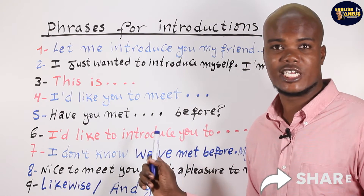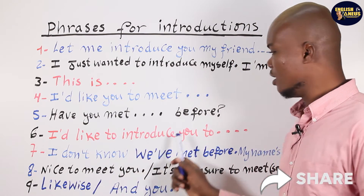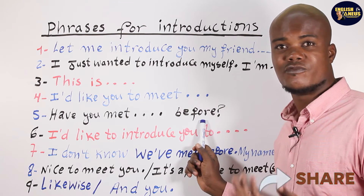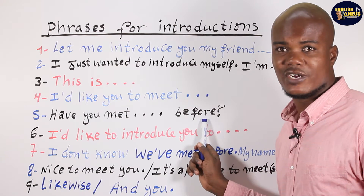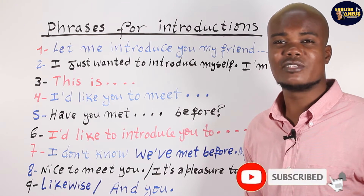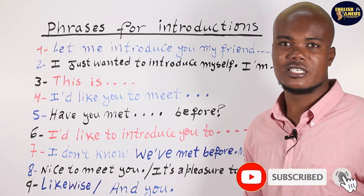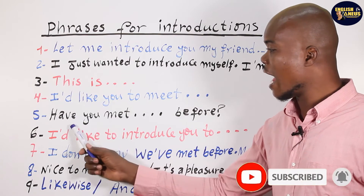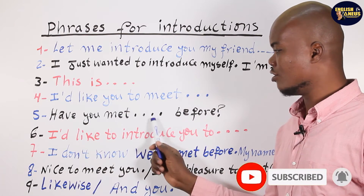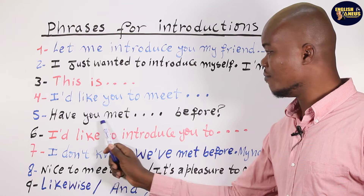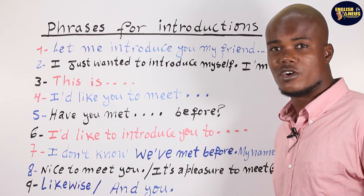Good. And you put the name of the person, then 'before.' For example: 'Have you met Jocelyne before?' — meaning 'Est-ce que tu as déjà rencontré Jocelyne?' 'Have you met Jocelyne before?' Good.